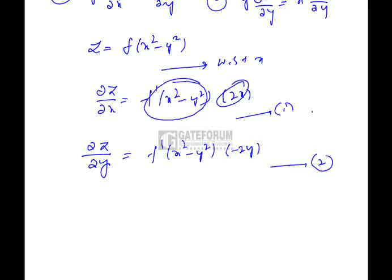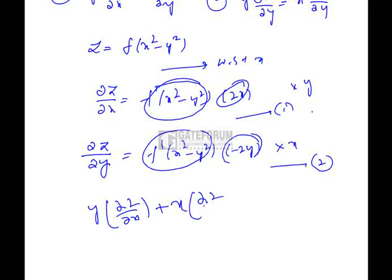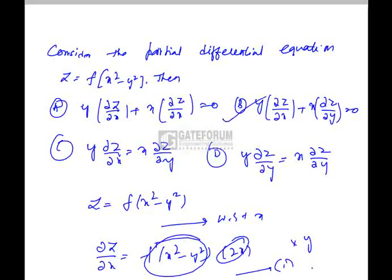We have 2x here and f dash of function. We have 2y here and f dash of function. If I multiply y to the first function and x to the second function and add then the result will be 0. So, it is y into del z by del x plus x into del z by del y will be equals to 0 which is nothing but option B.